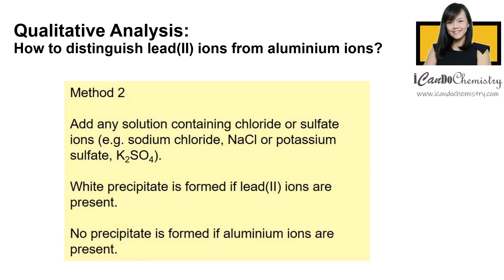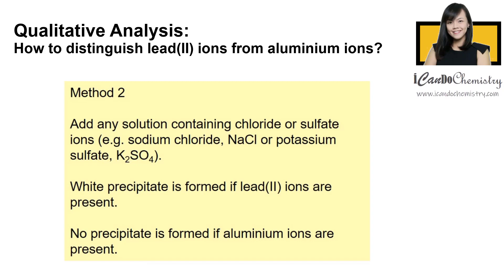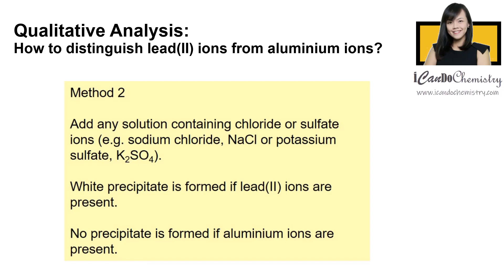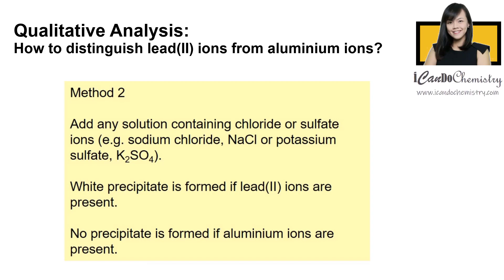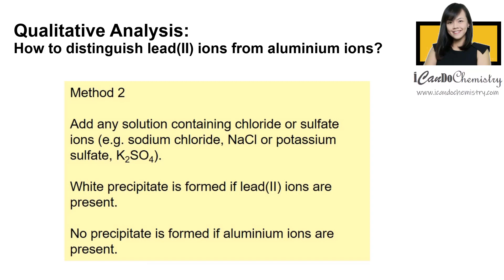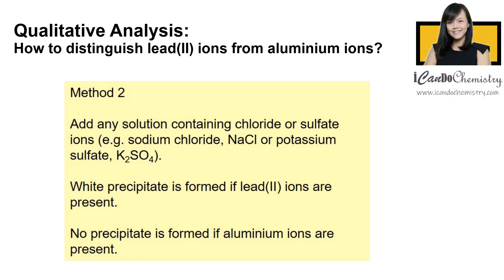Alternatively, a more common method: we can add any solution that contains chloride or sulfate ions — for example, sodium chloride solution or potassium sulfate solution. When any of these solutions is added and a white precipitate forms, then we can confirm that lead-2 ions must be present.